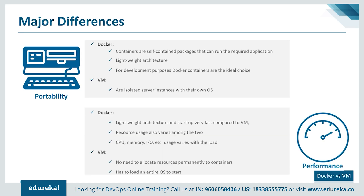Regarding performance: Docker and virtual machines are intended for different purposes, so it's not fair to measure their performance equally. The lightweight architecture makes Docker containers less resource-intensive than virtual machines, allowing them to start up very fast. In containers, resource usage such as CPU, memory, and I/O varies with load or traffic, and there's no need to allocate resources permanently. Scaling up and duplicating containers is also easier compared to virtual machines, as there is no need to install an operating system.